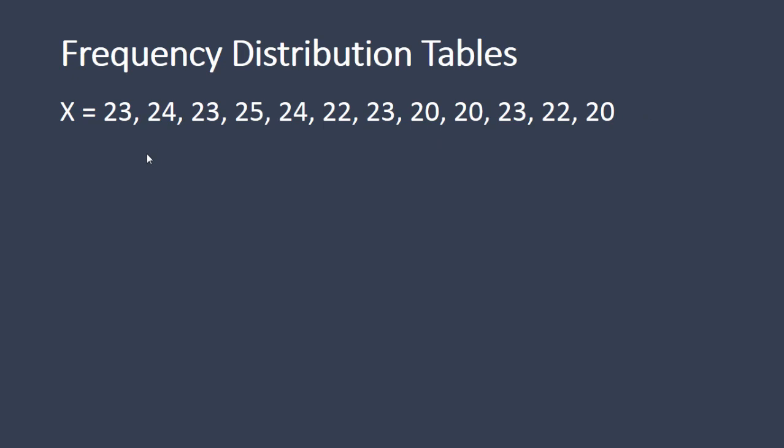There are also multiple values for some. For example, there's 1, 2, 3, 4 twenty-threes in this example. But in summary we have the values 20 through 25 where 21 is missing.